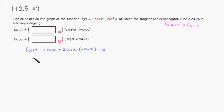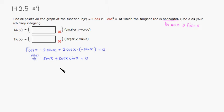Both terms have -2 in them, so let's divide by -2. That gives sin(x) from the first term and cos(x)·sin(x) from the second term, all equal to zero. Then sin(x) is common to both terms, so we factor it out: sin(x)(1 + cos(x)) = 0.